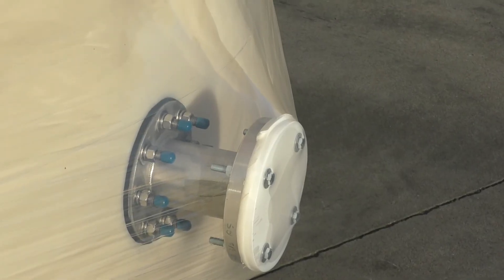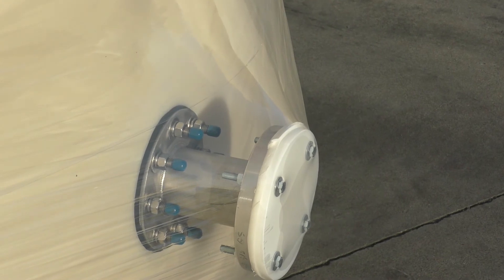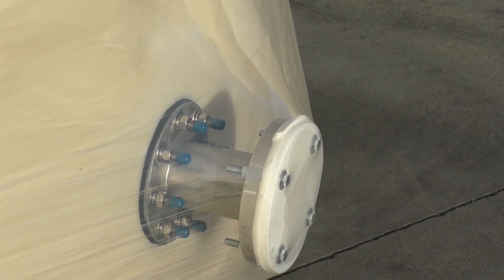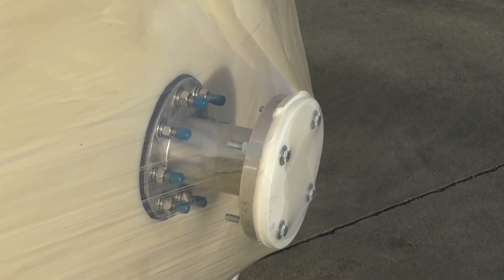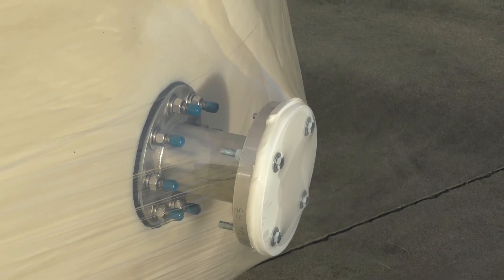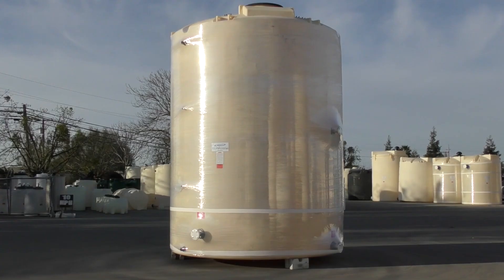Poly Processing prides itself in protecting your investment. We install fitting and flange protectors on the majority of the installed fittings before they leave the plant, and we wrap all tanks traveling a distance of 50 miles or greater to ensure you get the quality product you order.